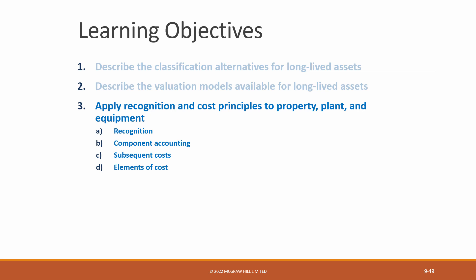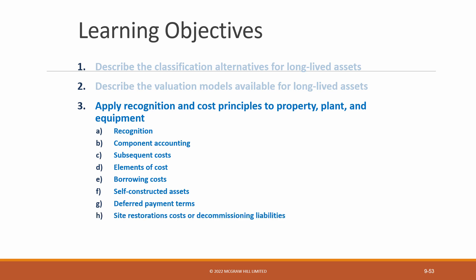We'll then cover cost elements — what must be included in the cost of PP&E — and how to account for borrowing costs when we borrow to purchase PP&E. Followed by how to account for assets which are self-constructed, meaning they're constructed by the entity for their own use. We'll then cover deferred payment terms — how to account for the cost of PP&E when we pay for it over a period of years at interest rates which are lower than the market rate or zero interest rate loans. We'll then cover site restoration costs, which is when a location must be restored to its original condition at the end of its useful life, also known as decommissioning liabilities. This will be followed by non-monetary exchanges — when assets of one entity are exchanged for the assets of another entity — followed by how to cost assets which are donated to the entity, and finally how to account for assets which are purchased with government assistance.